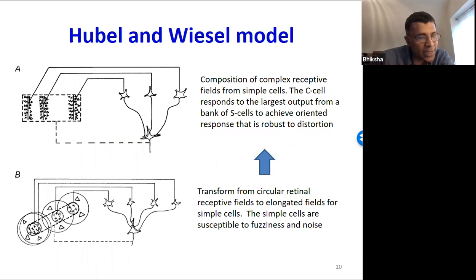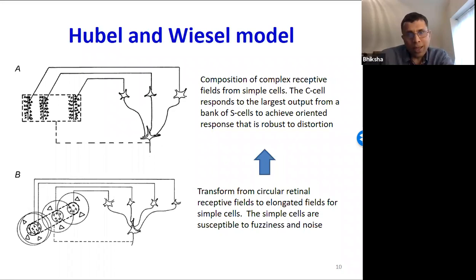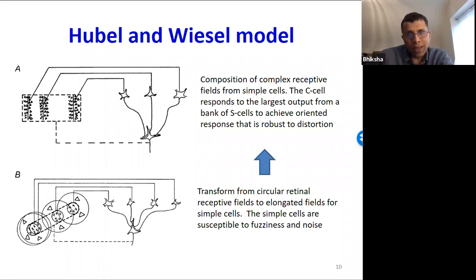The S cells are prone to noise, so the C cells connected to collections of S cells all looking at the same or approximately the same region. The C cell responded to the largest output from a bank of S cells — effectively a max operation — giving a more robust response.